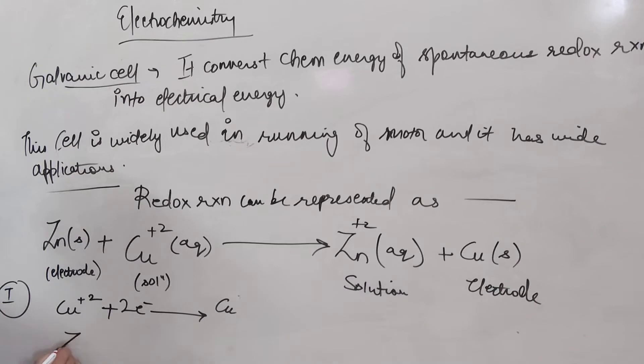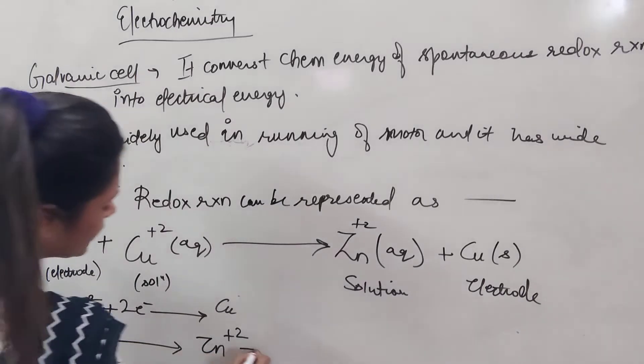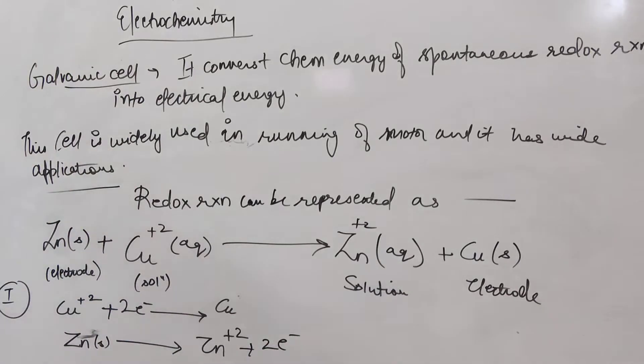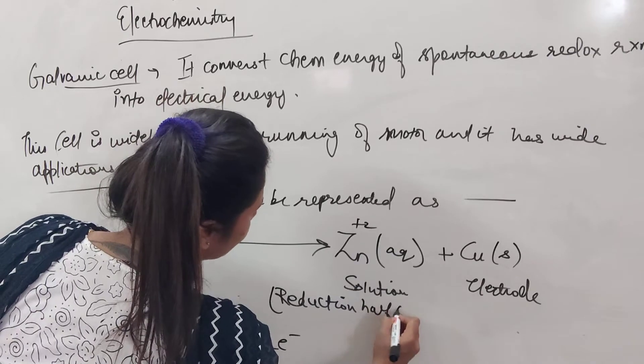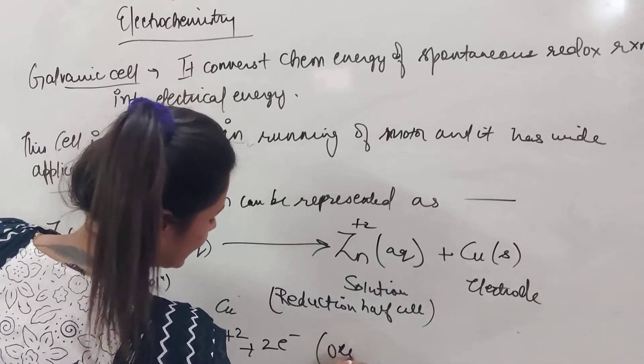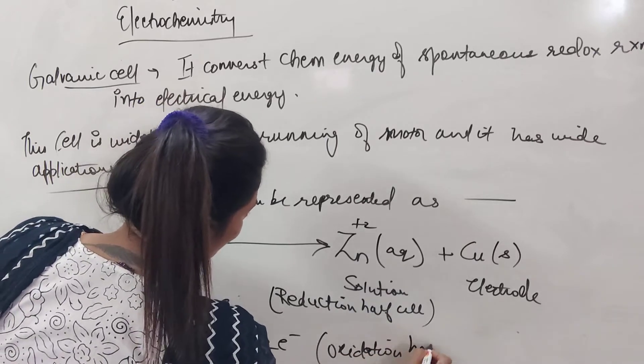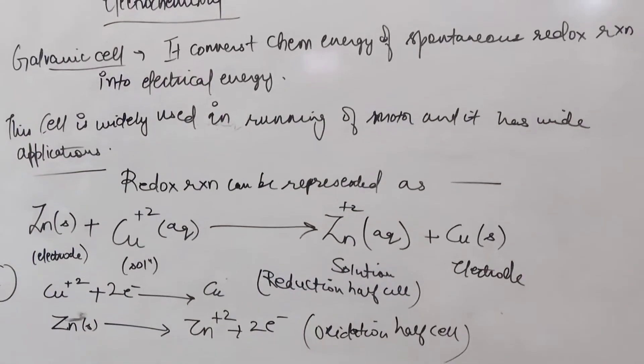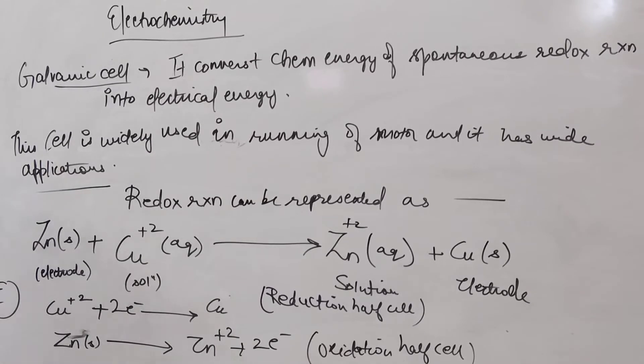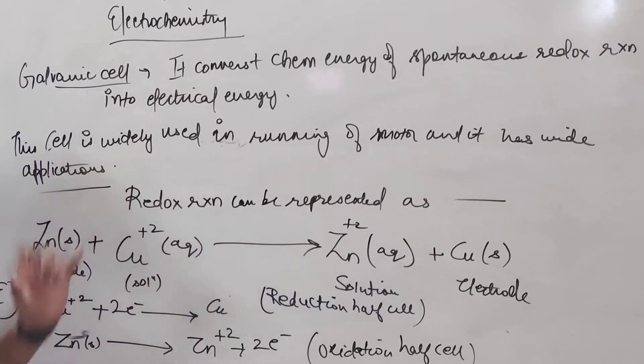Then here we are having Zn and it is giving us Zn²⁺. So that means 2 electrons have been removed from this particular entity. So Zn solid, where 2 electrons have been removed. So here when the 2 electrons are added it is known as reduction and it is reduction half cell. And here when electrons are removed it is oxidation half cell.